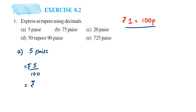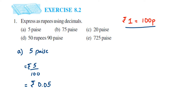For 5/100, there are two zeros, so we place the decimal point two places from the right. We have only one digit, so we add a zero to make two places: 05, then put the decimal and a zero before it, giving 0.05 rupees. This technique only applies when the denominator is a power of ten — count the zeros and move the decimal that many places from the right.